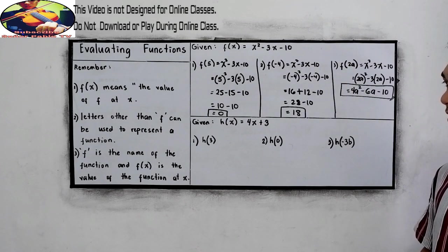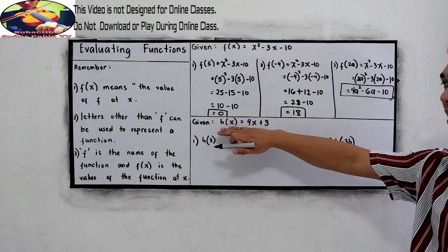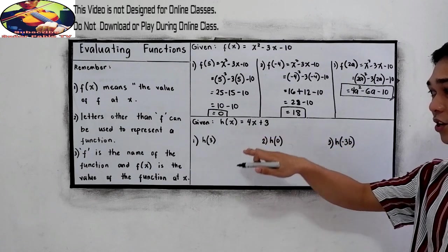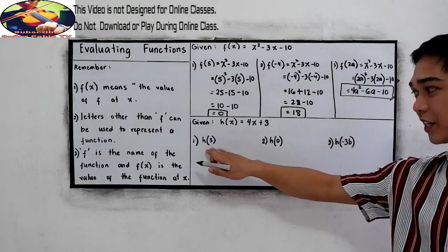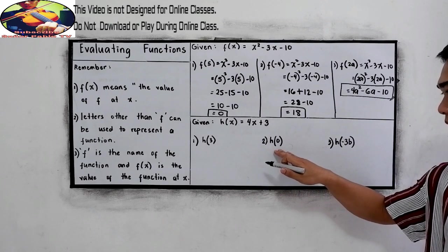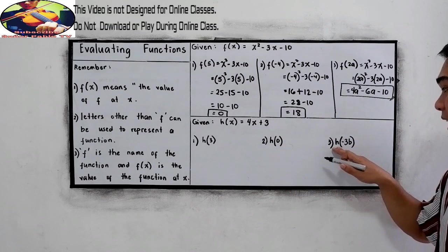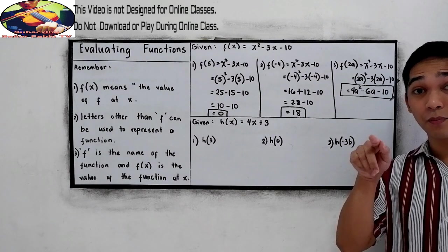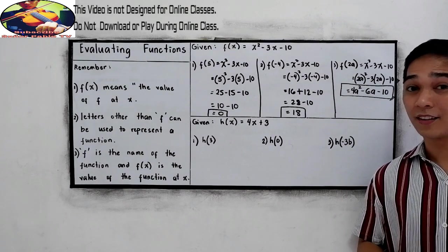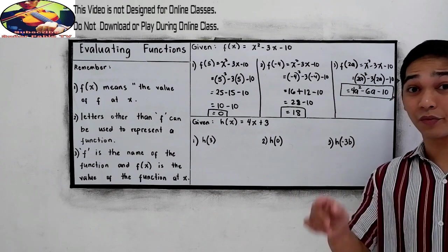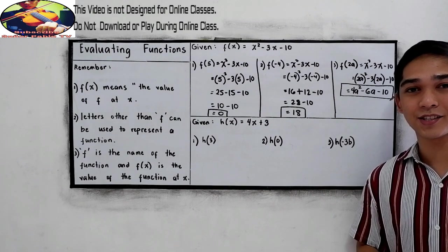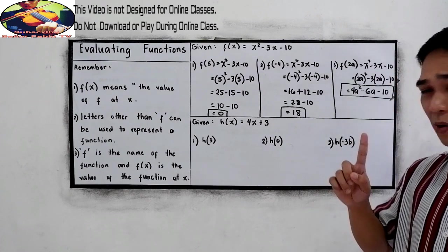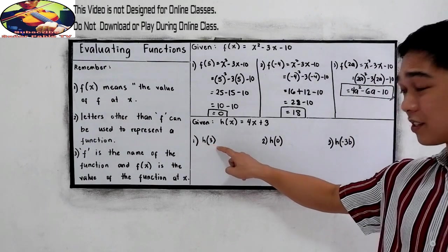Now, it's your turn. Given h(x) is equal to 4x plus 3, you're going to find h(3), h(0), and h(-3b). If you want to try, close the video. Then, after answering, you can resume watching to check your answers. Okay, let's check number 1, h(3).